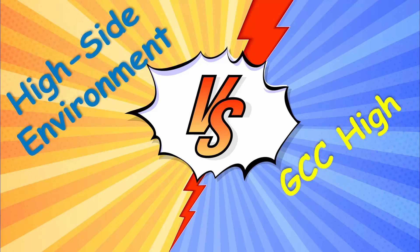The next thing I want to talk about is the difference between a high side environment and GCC High. When handling classified data, environments are built with a high side and a low side. The low side is for general non-classified information, day-to-day emails, things like that. The high side is secured for handling classified data and is protected by countermeasures like air gapping, where the classified system has no connection to insecure networks or machines. GCC High is not a high side environment. GCC High got its name because it meets FedRAMP high impact requirements. If you're coming in thinking that GCC High is a cloud-based high side environment, that is not the case.